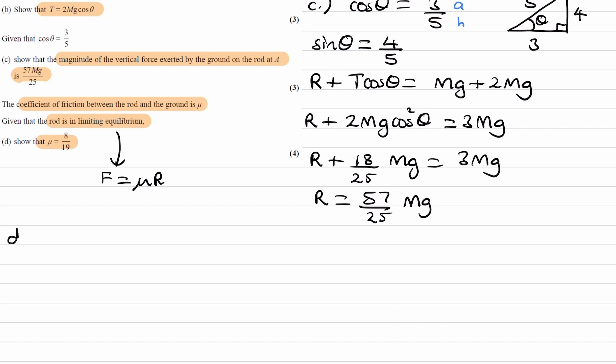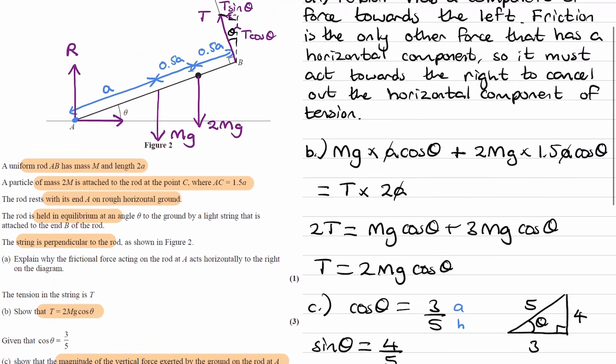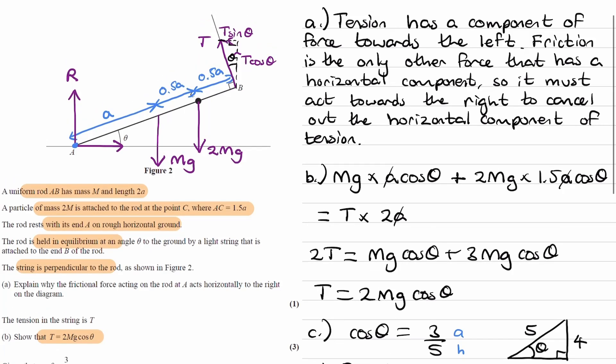Doing a similar kind of thing, but now considering the horizontal forces. Generally for these kinds of moments questions, or ladder questions, you want to form three equations. Your first will be a moments equation, and then you'll have two other equations: one which is upward forces equal downward forces, and the other is forces to the right equal forces to the left. We've already done a moments equation. We already have a vertical forces equation. The thing we haven't considered yet is forces to the right equal forces to the left.